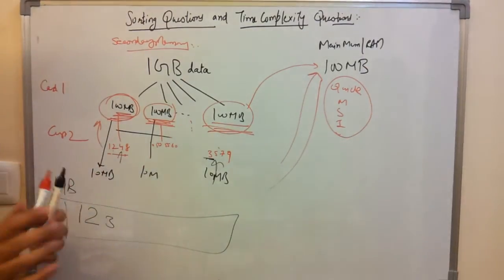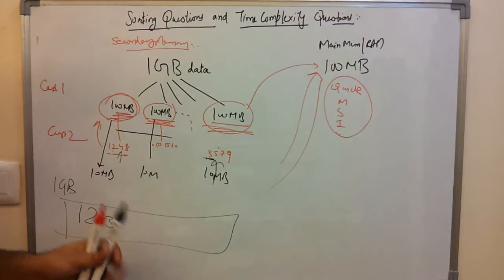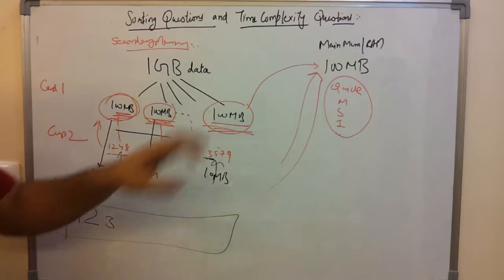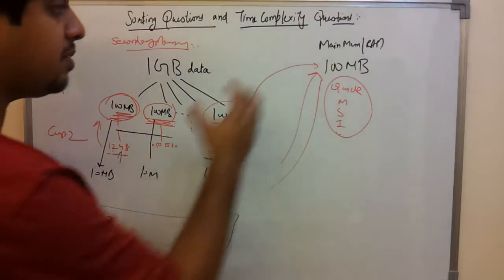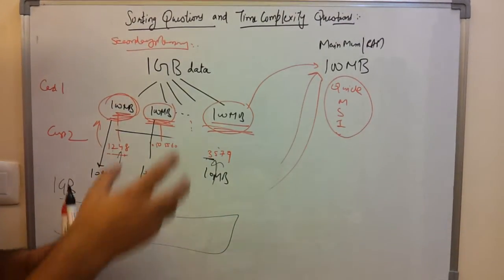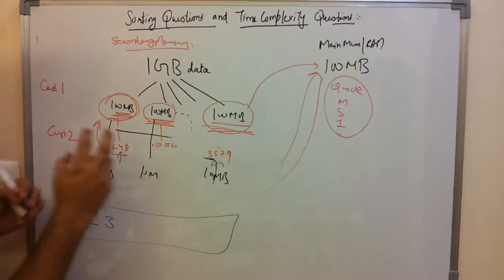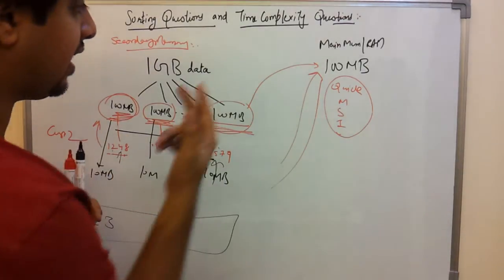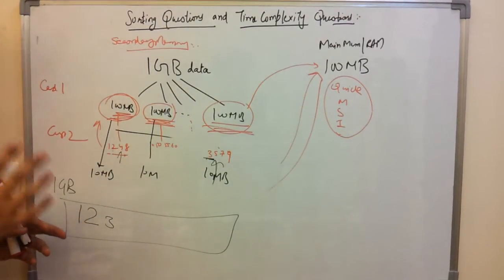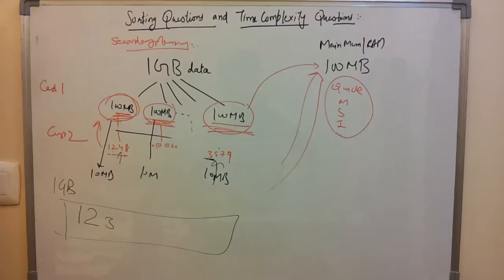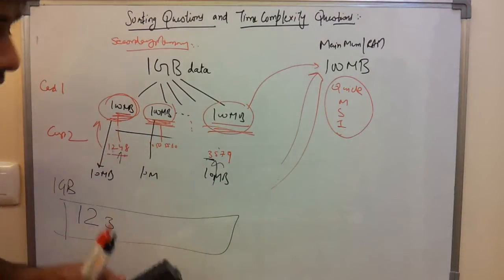The idea is: you take 10 MB from each group. The smallest element among all group representatives is written to secondary memory, and the next element from that group is loaded in to replace it. This is the merge process.